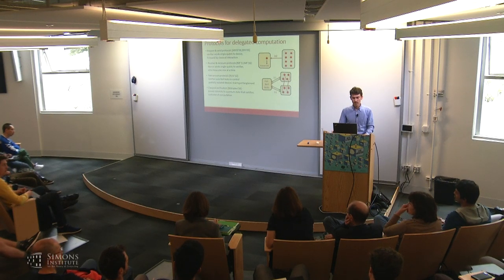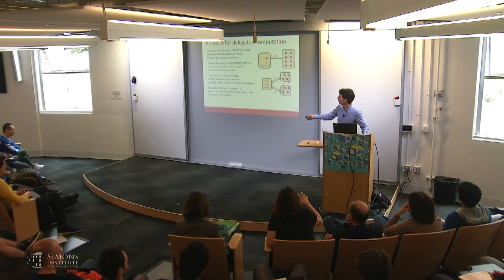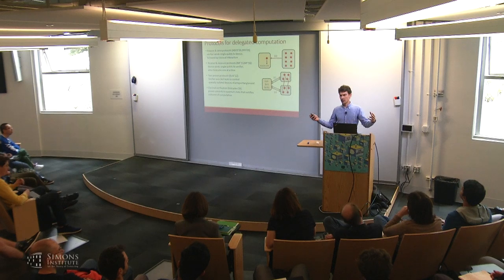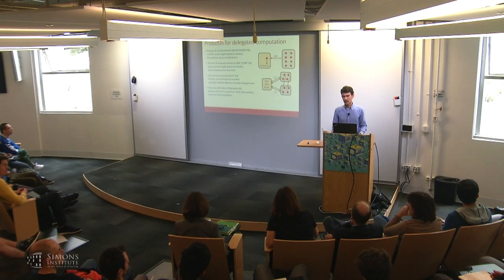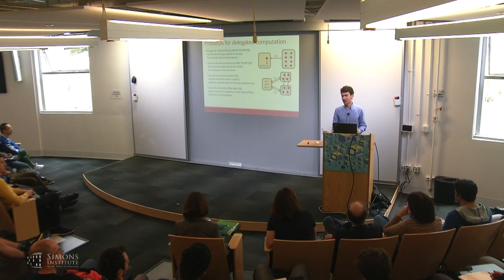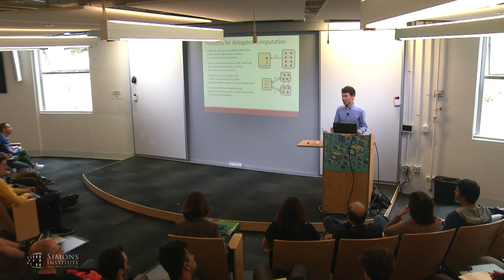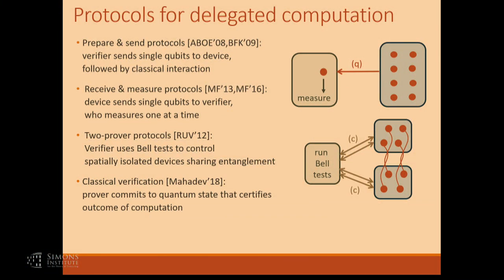For those first two protocols, the verifier's time is as long as the computation. For the last one, the prover sends something based on the entire computation, but the size of that thing has the size of the number of gates in the computation. All these protocols have verifier runtime that's generally polynomial — maybe quadratic or cubic — in the number of gates. The difference is that it's classical runtime, not quantum. The number of qubits you process in these protocols is proportional to the number of gates in the circuit, but it's one at a time.